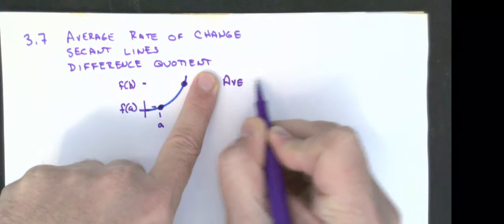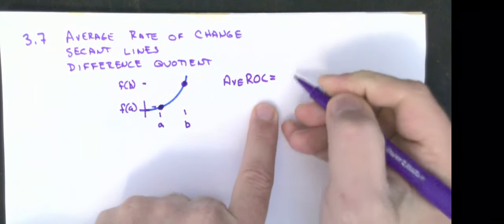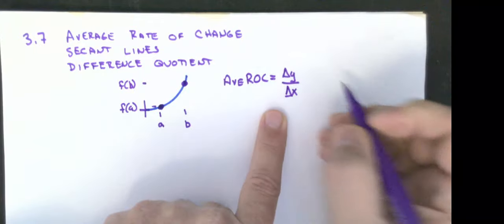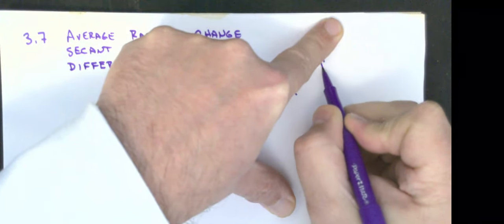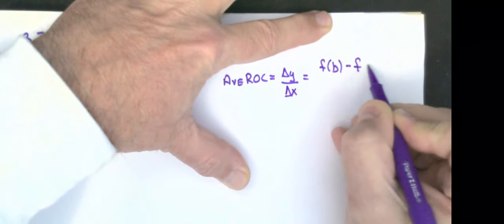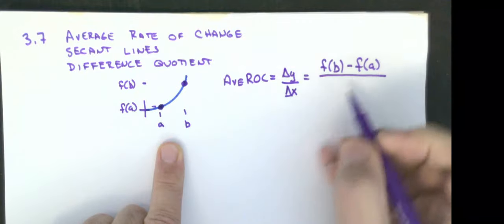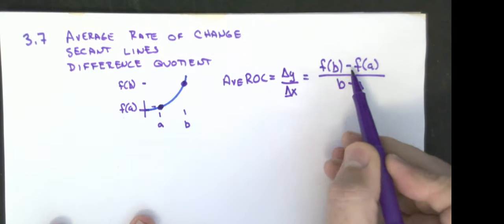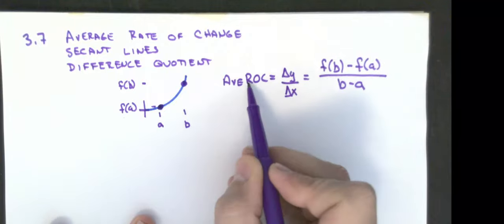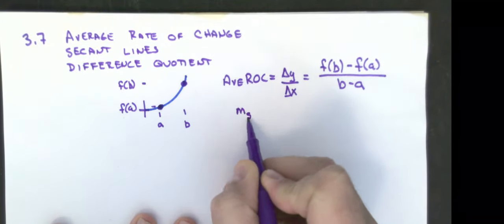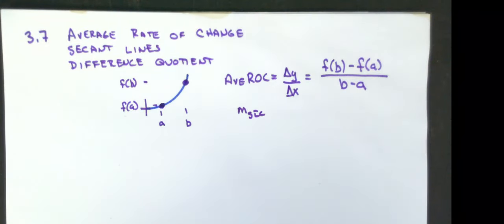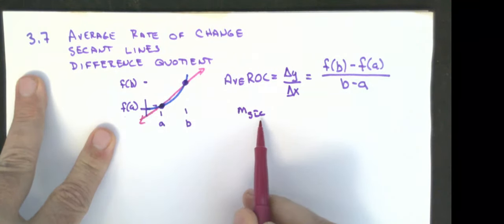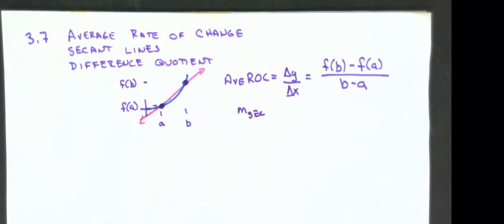The average rate of change is the change in my y values over the change in my x values. My y value change is f of b minus f of a, and my x values are b and a. This equation is y2 minus y1 over x2 minus x1. Your average rate of change is the slope of the secant line — the line that crosses the curve at the two points of interest.